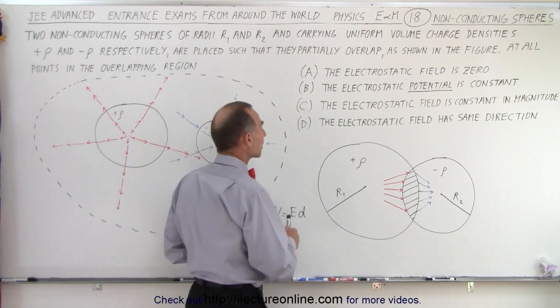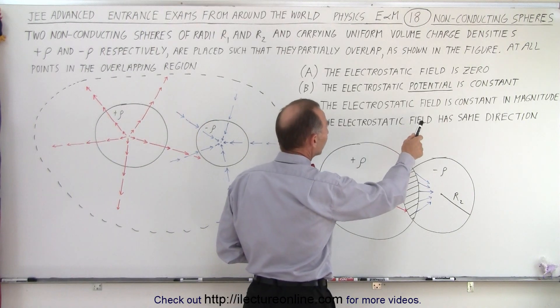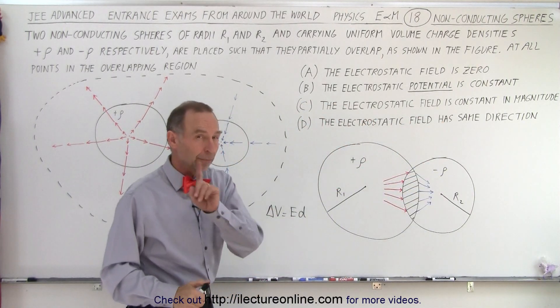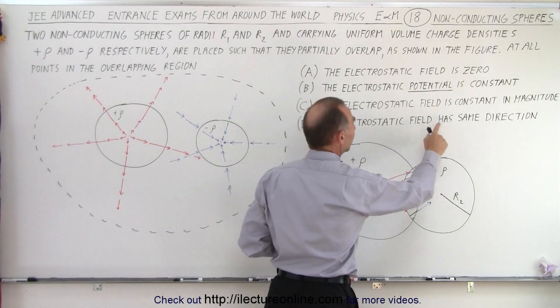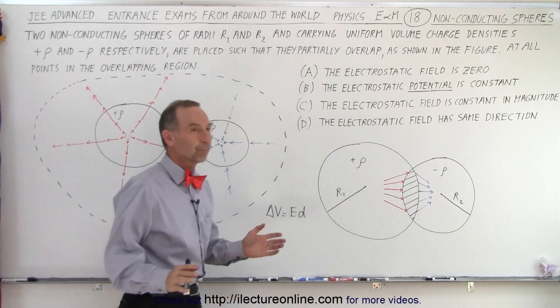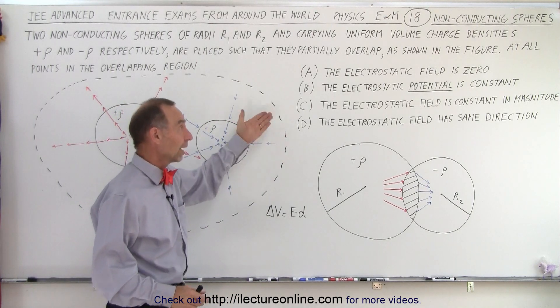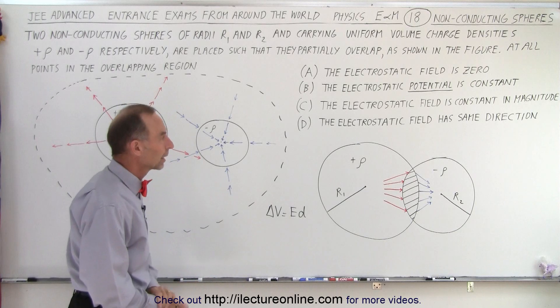Then we have C and D. It says the electrostatic field is constant in magnitude, which means it's not zero, but it's constant in magnitude. And the electrostatic field has the same direction. So maybe C is true, but not D. Maybe D is true, not C. We'll see. All right, so first of all, what I've done here is on the left side, I've drawn some electric field lines.